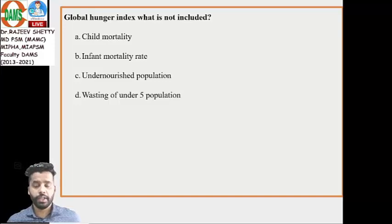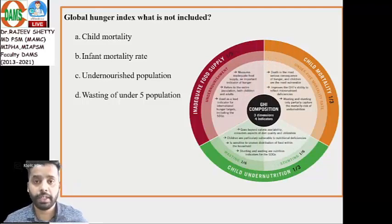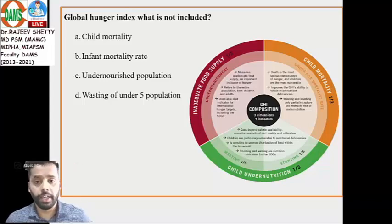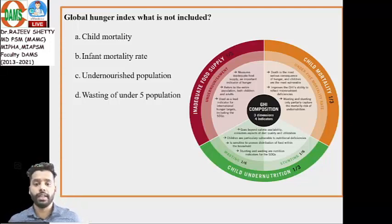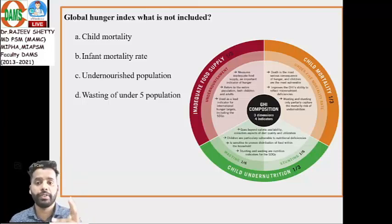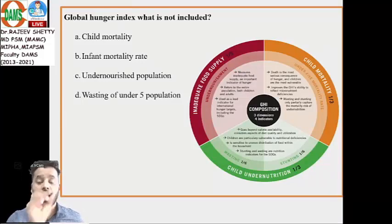In the Global Hunger Index, there are three dimensions. Remember the mnemonic ICC — like International Cricket Council. 'I' stands for Inadequate food supply, the first 'C' for Child undernutrition, and the second 'C' for Child mortality. So three dimensions: inadequate food supply, child undernutrition, and child mortality.